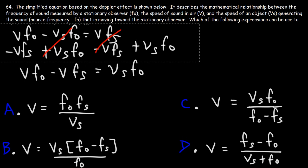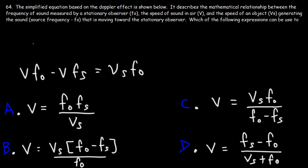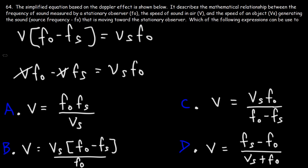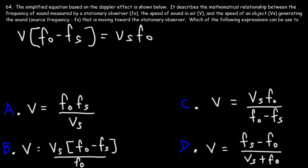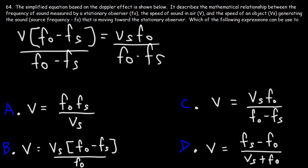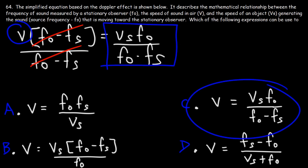Our next step is to factor out V. Taking out V gives us V times (Fo minus Fs) equals Vs·Fo. That's how we convert two V variables into one — by factoring out. Our last step is to divide both sides by (Fo minus Fs). So V equals Vs·Fo over (Fo minus Fs), which means answer choice C is the right answer.